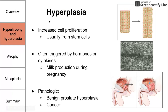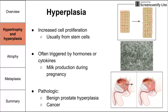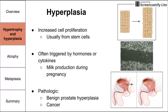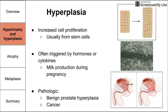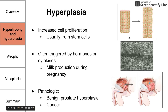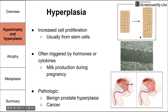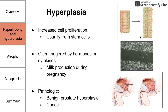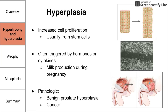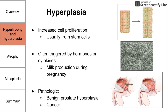Hyperplasia, or the increase in cell number, is a bit simpler to explain. Hyperplasia is essentially increased cell proliferation, or mitosis, and the cells are usually dividing and differentiating themselves from a set of stem cells. Normal or physiologic hyperplasia occurs in the body and is often triggered by hormones, cytokines, or other signaling molecules. One example of normal hyperplasia is the proliferation of the milk ducts in response to increased estrogen during pregnancy.